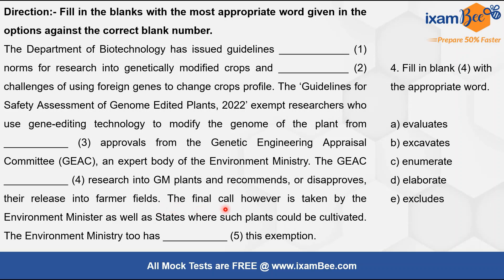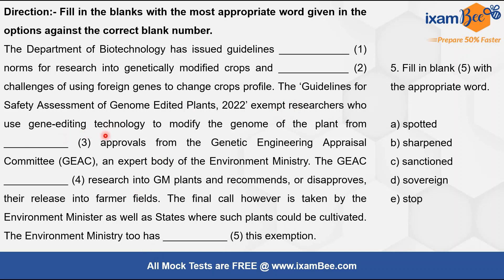The next sentence states: 'The final call is taken by the environment minister as well as states where such plants could be cultivated.' Then: 'The environment ministry too has [blank] this exemption.' 'Spotted' and 'sharpened' don't fit. 'Sanction' means to approve, so 'sanctioned this exemption' means the ministry also approved allowing researchers using gene editing technology to be exempted. So blank 5 is option C — sanctioned.